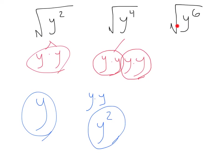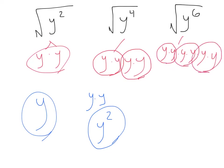Let's check out square root of y to the sixth. This would break down to y times y times y times y times y times y — six y's. If we break all of these into pairs, we'd have one pair, two pairs, three pairs. That would be y times y times y, or y cubed, or y to the third.